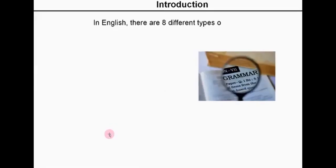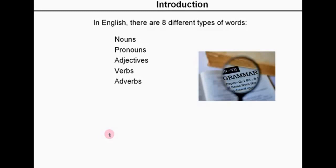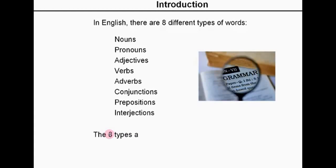In English, there are eight different types of words. There are nouns, pronouns, adjectives, verbs, adverbs, conjunctions, prepositions and interjections. And the eight types are called parts of speech.